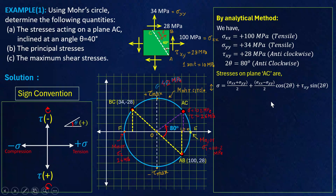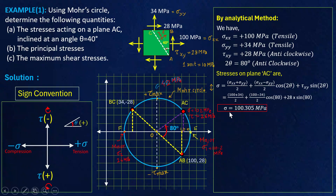Substituting the values: sigma xx = 100, sigma yy = 34, so (100 + 34)/2 + (100 − 34)/2 × cos(80°) + 28 × sin(80°). Solving this, the normal stress on the inclined plane sigma equals 100.3 MPa. We got approximately 102 MPa graphically, which is very close to 100.3 MPa — if you draw a proper graph you will get almost equal values, so that is acceptable.